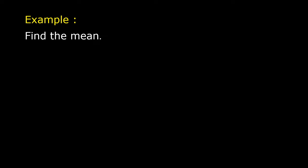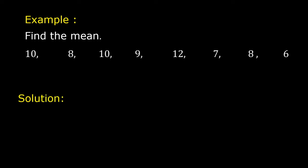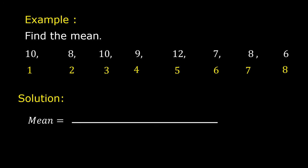Example: find the mean of 10, 8, 10, 9, 12, 7, 8, and 6. Solution: count the values — one, two, three, four, five, six, seven, eight — there are eight values. Mean equals the sum of all values: 10 + 8 + 10 + 9 + 12 + 7 + 8 + 6, over 8. The sum of the values is 70, divided by 8.